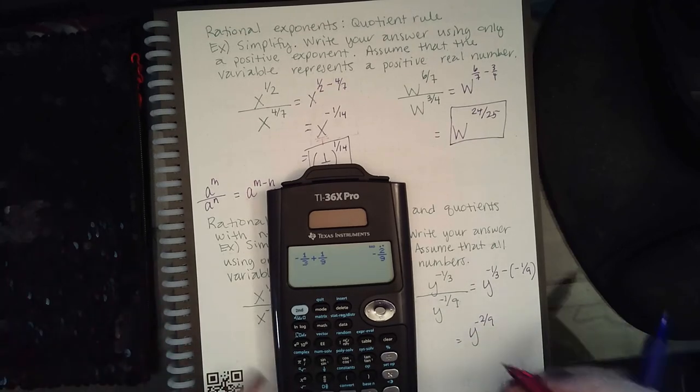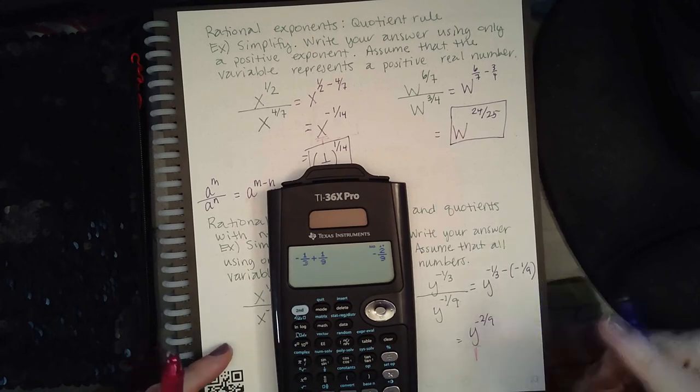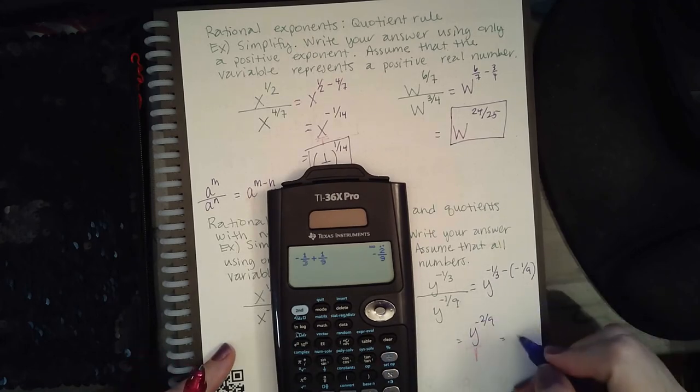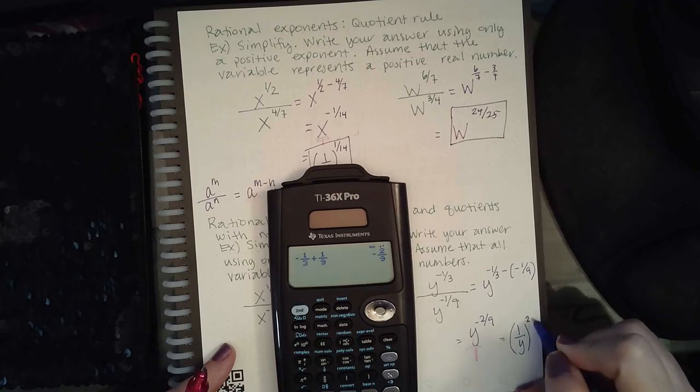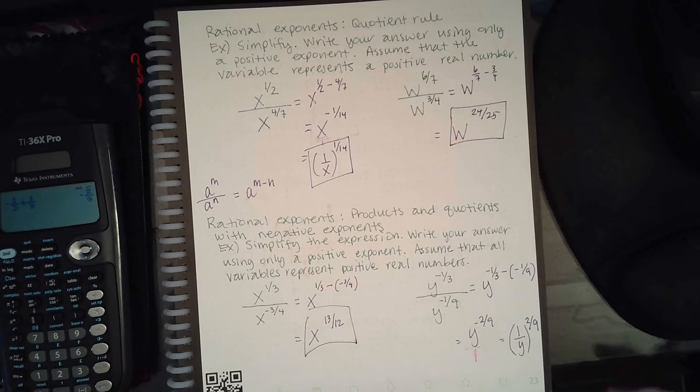This is a negative exponent. So if I imagine this as if it's over 1, to make it positive this fraction has to flip over, and then now it's raised to the positive 2/9. Okay.